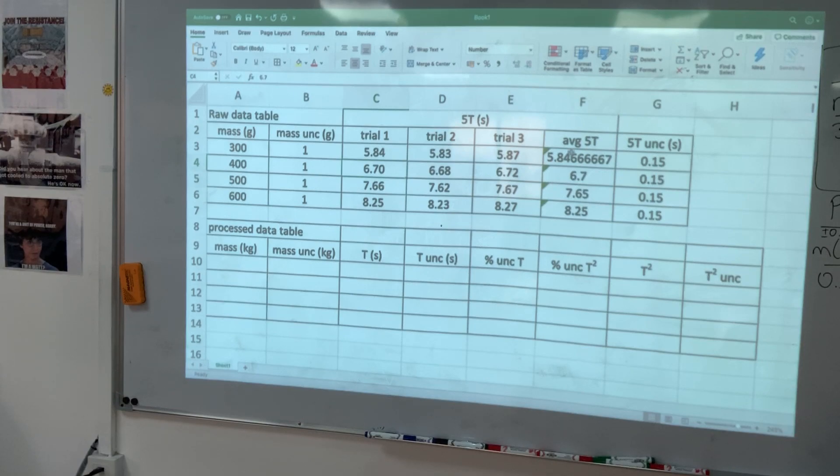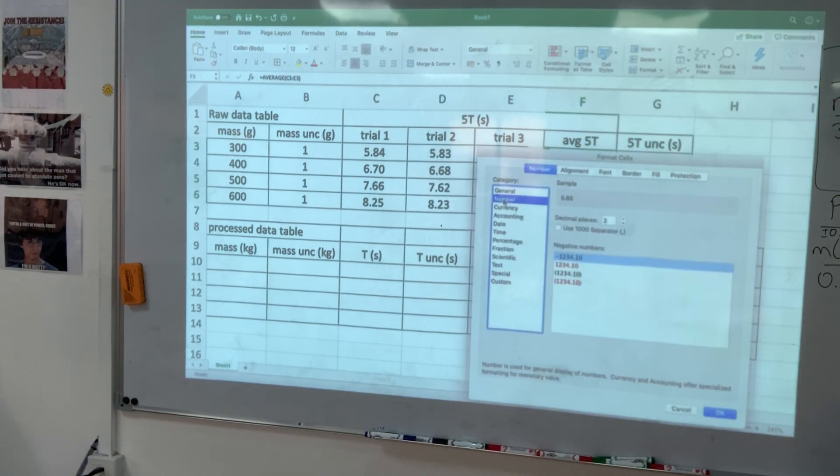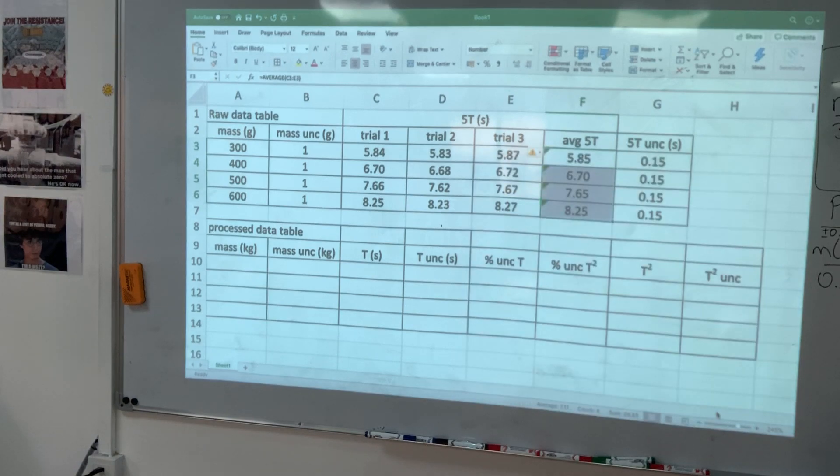And I'm going to do the same thing here. Select, right click, format, number, two decimal places, OK. And I'm now happy with what I see.